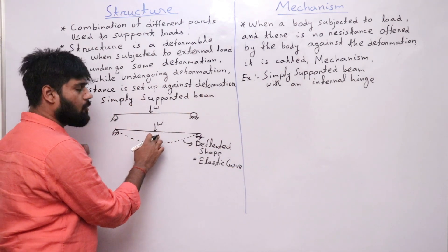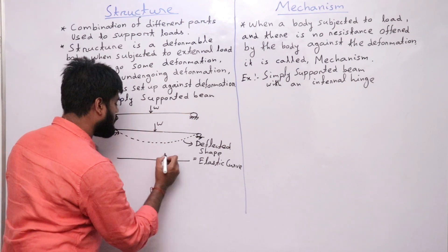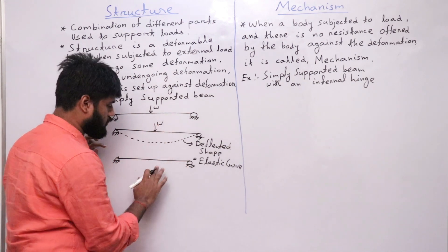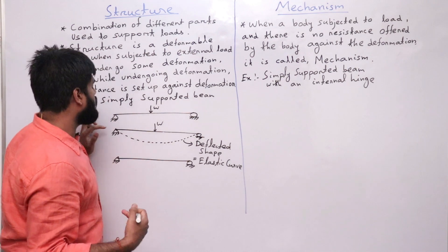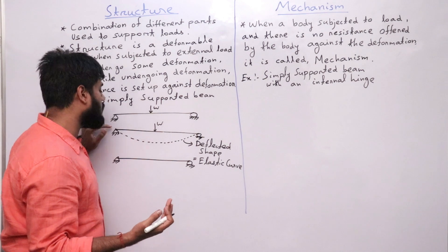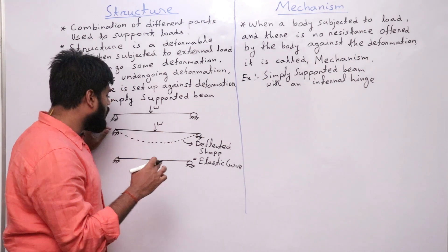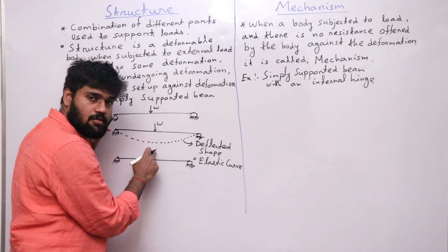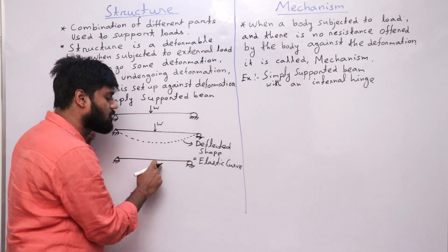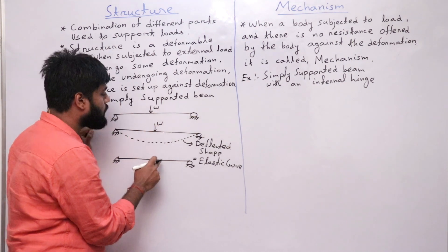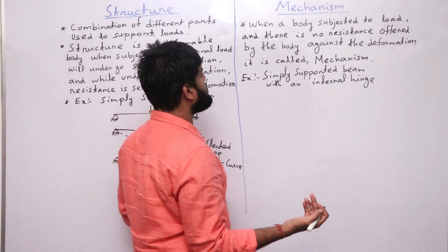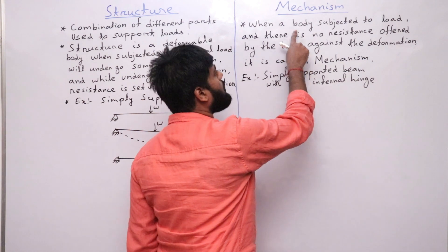After the removal of the load, the body will come back to its original position. You apply a load W, the body undergoes some deformation, and the body has a certain amount of resistance against that deformation. When you remove the load, the body comes back to its original shape. So I can call a simply supported beam a structure.